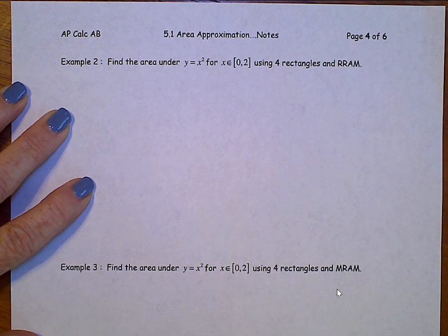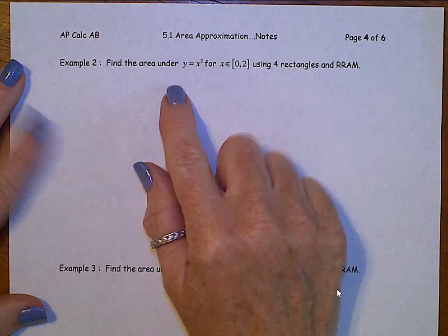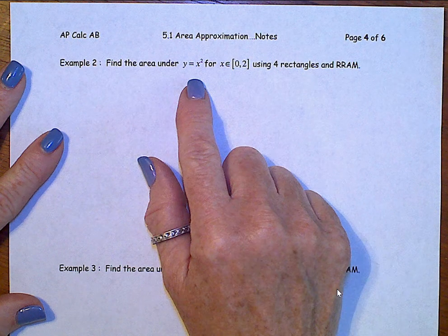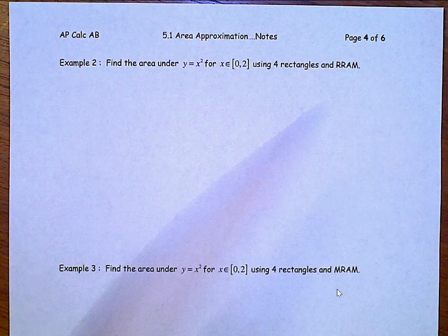Section 5.1, Calculus AB, page 4. Alright, we are going to find the area underneath y equals x squared for x between 0 and 2 using 4 rectangles and RRAM.